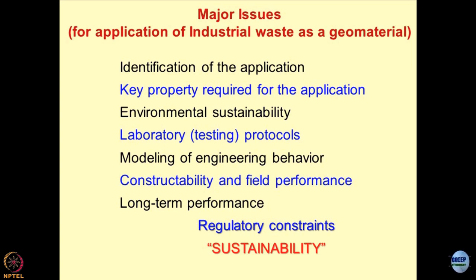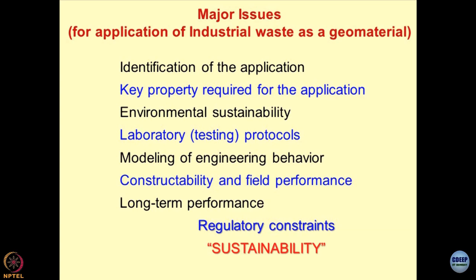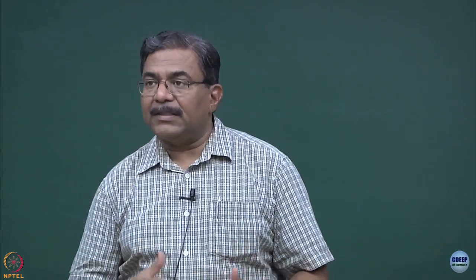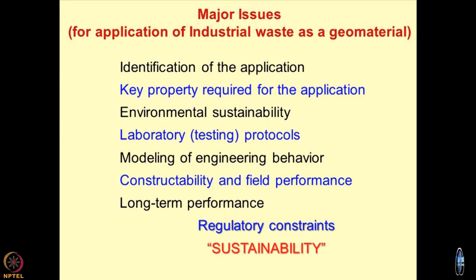When selecting a material, major issues are constructability and how the system is going to perform — including long-term monitoring — and whether the system can actually be constructed. It may happen that the industrial byproducts being used are lighter or heavier than the native soil. When we talk about slags, their specific gravities are extremely high — 3.5, 3.6, 3.7 — compared to soils at 2.6 or 2.7. The question then is how to balance these two systems, and this is where the geomechanics of contact interaction comes in. Field performance, constructability, and long-term performance are all big issues.